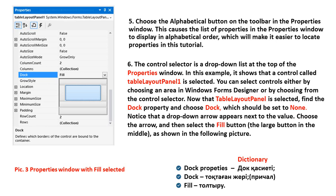In this example it shows that a control called TableLayoutPanel1 is selected. You can select controls by choosing an area in Windows Form Designer or by choosing from the control selector. Now that the Table Layout Panel is selected, find the Dock property and choose Dock, which should be set to None. Notice that a drop-down arrow appears next to the value. Choose the arrow and then select the Fill button, the large button in the middle.